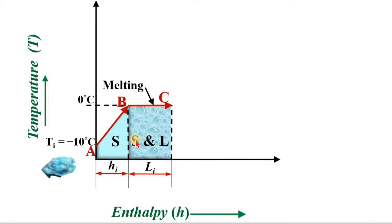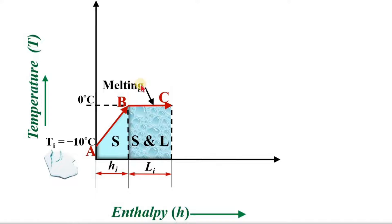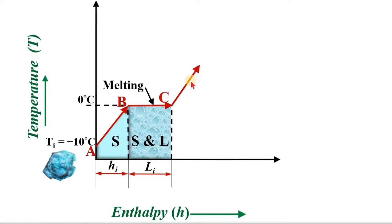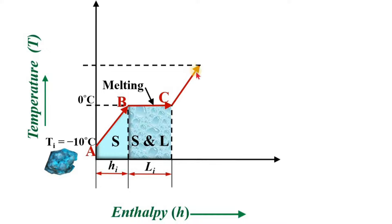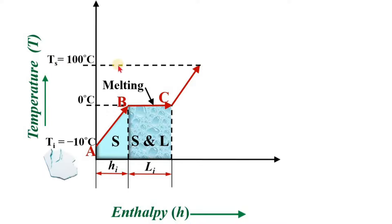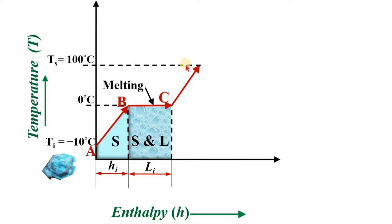In this portion there is a mixture of solid and liquid, because this is the melting point and the ice gradually melts into liquid. On further heat supply, it reaches point D where the temperature is known as the saturation temperature of water — 100 degrees Celsius at 1 bar pressure.